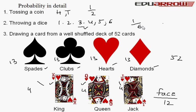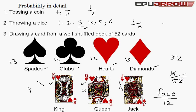And in cards, if we want to draw a king: there are 4 kings and the total number of cards is 52. So the probability of drawing a king is 4 upon 52, which simplifies to 1 upon 13.